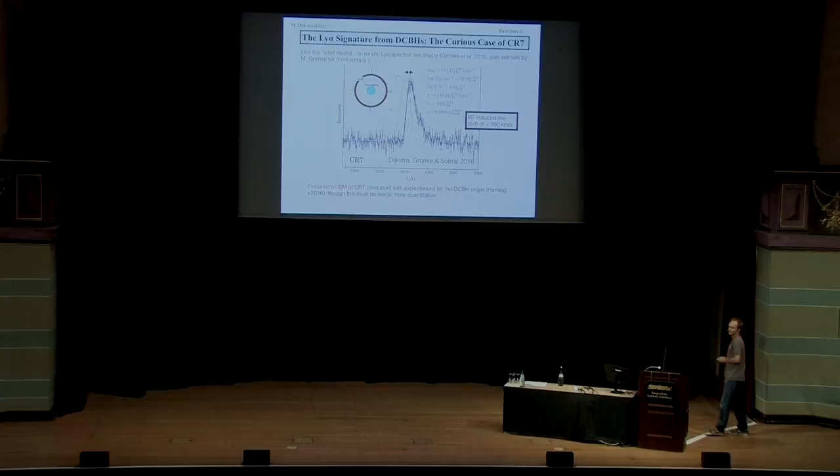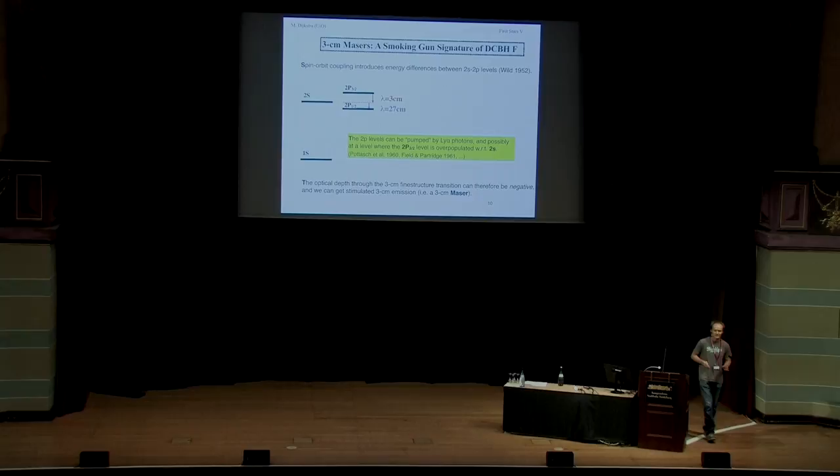Now in the final four and a half minutes, I look at my, I talk about my favorite signature of direct collapse, and this is, I think, a smoking gun signature, and I really mean smoking gun. If we see this, there's no doubt, really. So, these are the energy levels of the hydrogen atom, ground state, first excited state, Lyman-Alpha connects 1s to 2p.